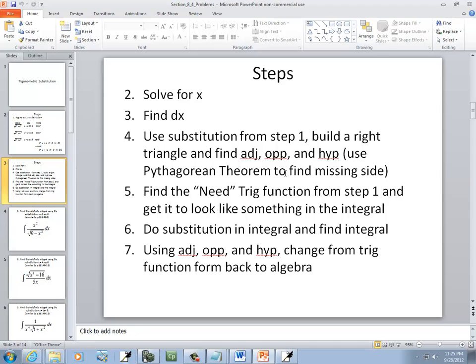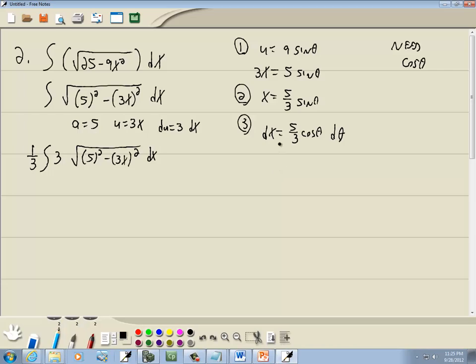Using substitution from step 1, build a right triangle and find the adjacent, opposite, and hypotenuse using the Pythagorean theorem to find the missing side. So here we got 3x is equal to 5 sine theta. So I divide both sides by 5 and I got sine theta is equal to 3x over 5. And sine is equal to opposite over hypotenuse. So here's theta, opposite would be 3x, the top part. Hypotenuse would be 5.